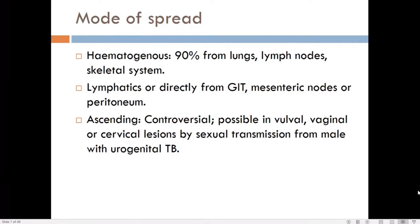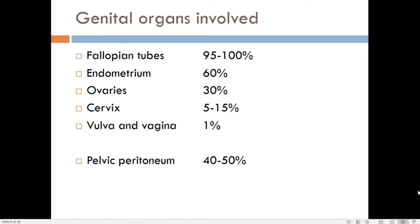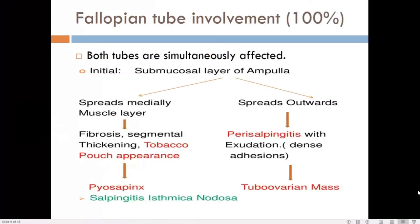The first organ involved is the fallopian tube, in up to 100 percent of cases. From there it spreads to the endometrium in 60 percent of cases, the ovaries in 30 percent, the cervix in 5 to 15 percent, the pelvic peritoneum in 40 to 50 percent, and the vulva and vagina in only about 1 percent of cases.